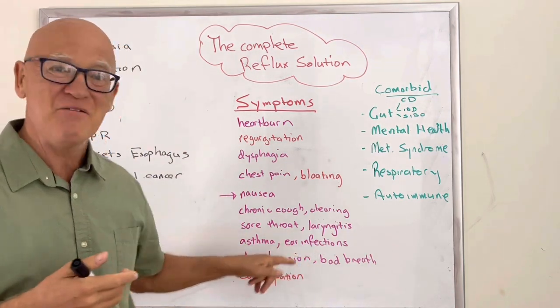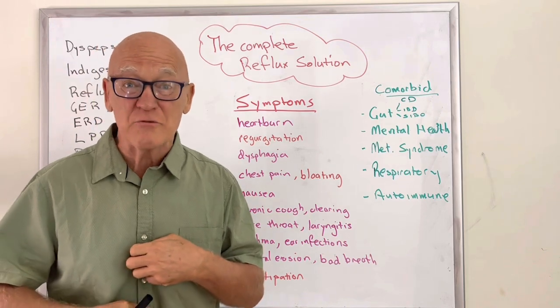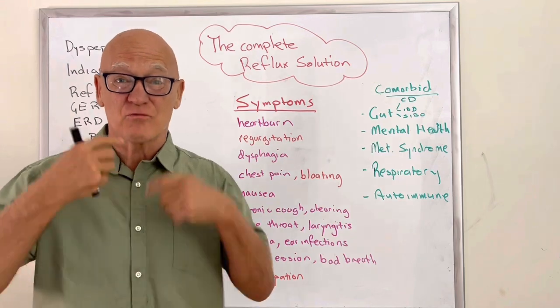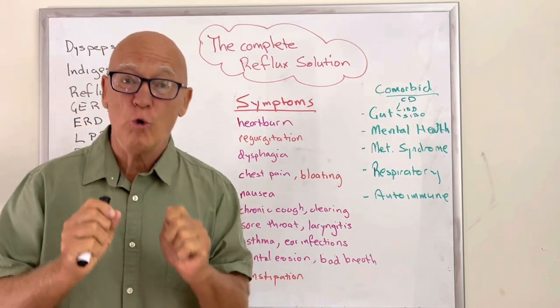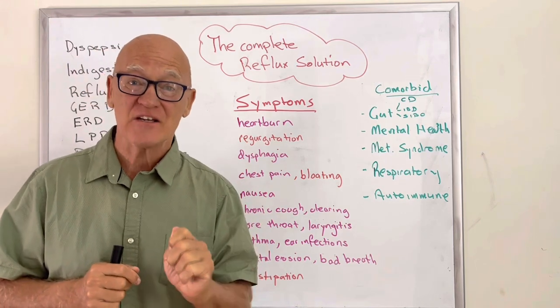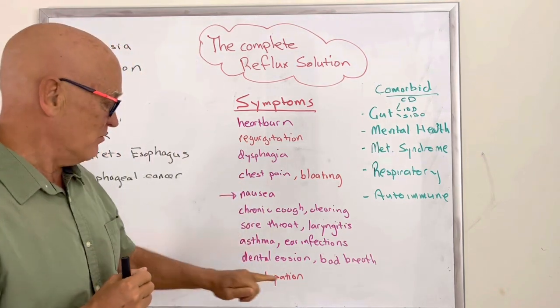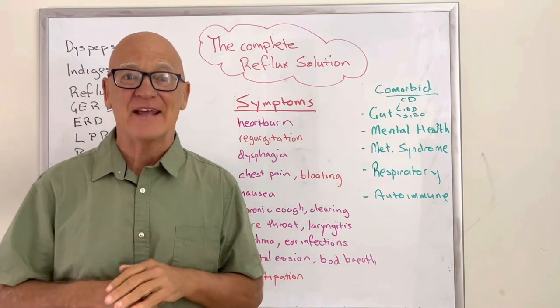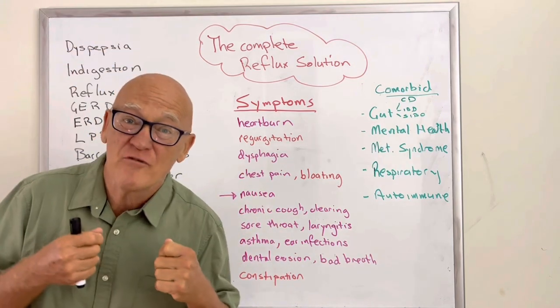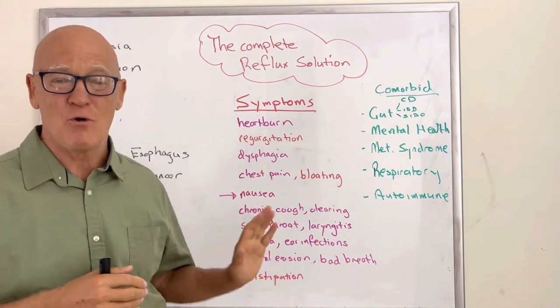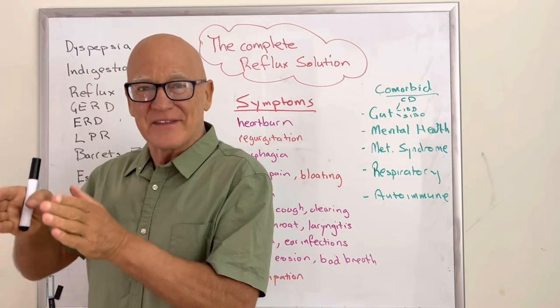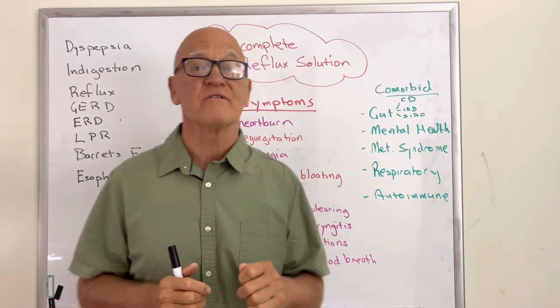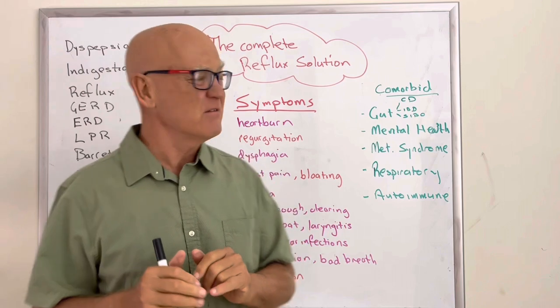For example, chronic cough, clearing at a sore throat, laryngitis, asthma, ear infections, dental erosion, tooth decay, mouth ulcers. Ear infections in kids, people don't realize it's probably related to the acid reflux and the wrong type of microbiome in the mouth. It's all related and these are all in the scientific published studies.